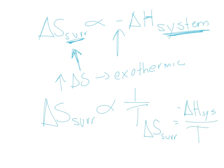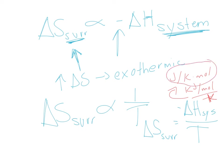If you look at the units, this actually makes perfect sense. Our units for entropy are joules per Kelvin per mole. Enthalpy is kilojoules per mole, and if you divide that by temperature you get Kelvin in the denominator. Once you adjust kilojoules to joules, you end up getting to the correct units of entropy.